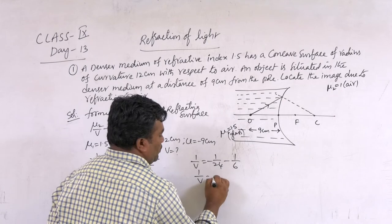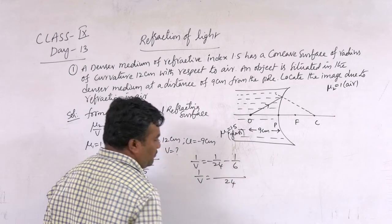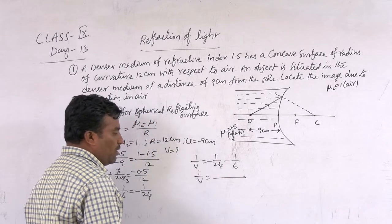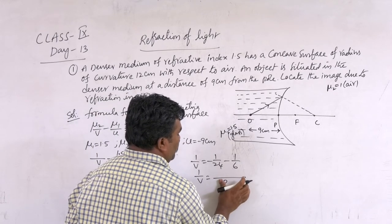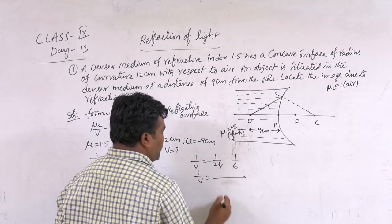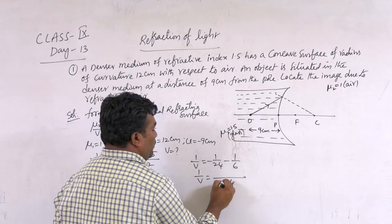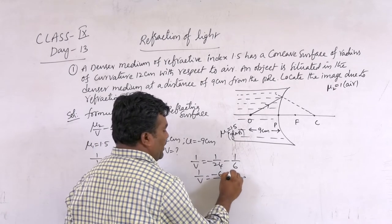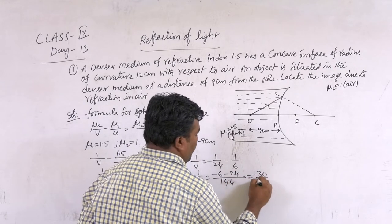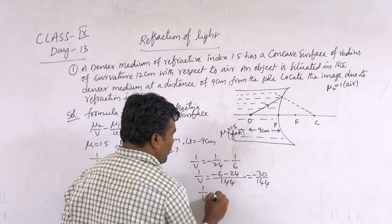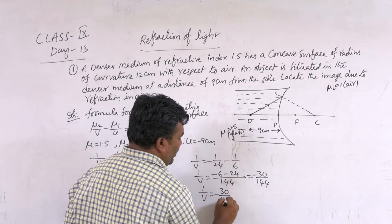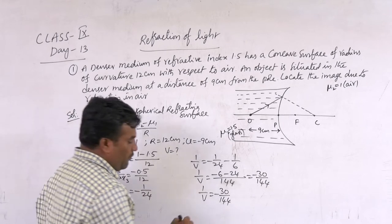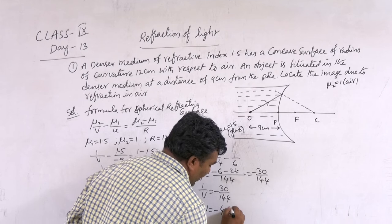1/V = −1/24 − 1/6. Finding a common denominator: −1/24 − 4/24 = −5/24... working through: −6 − 24 over 144 gives −30/144. So 1/V = −30/144, which simplifies. Finally, V = −4.8 cm.